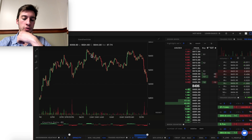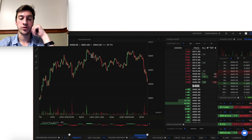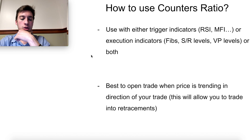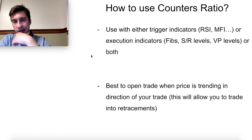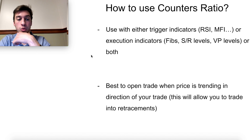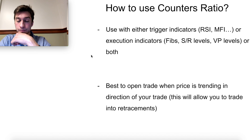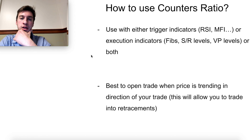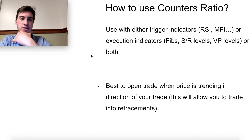We're looking for points where the counters ratio goes green and points where it goes red, and then doing the opposite of what other people have already done. We don't want to use this indicator by itself or without context — we need to know if price is in an established trend, if it's consolidating, or if it's a weak or strong trend. We can use trigger indicators like RSI and MFI going overbought or oversold, or execution indicators like Fibonacci levels, volume profile, and support and resistance levels.